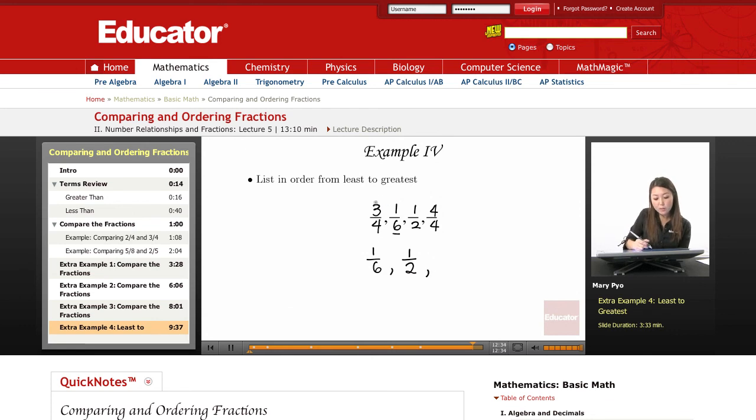Then three fourths is going to be the next smallest, because if you eat three out of four slices, you still have some cake left over, right? Whereas if you eat four out of four slices, then you ate the whole cake. So the next fraction is going to be three over four, and then the greatest fraction is going to be four out of four.